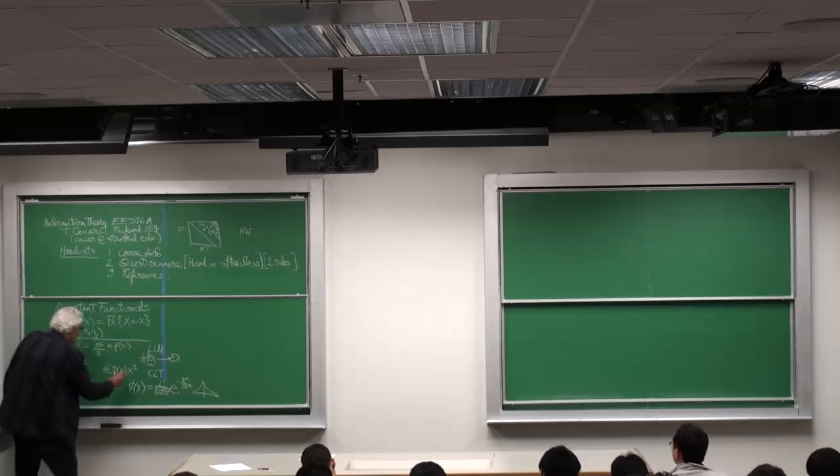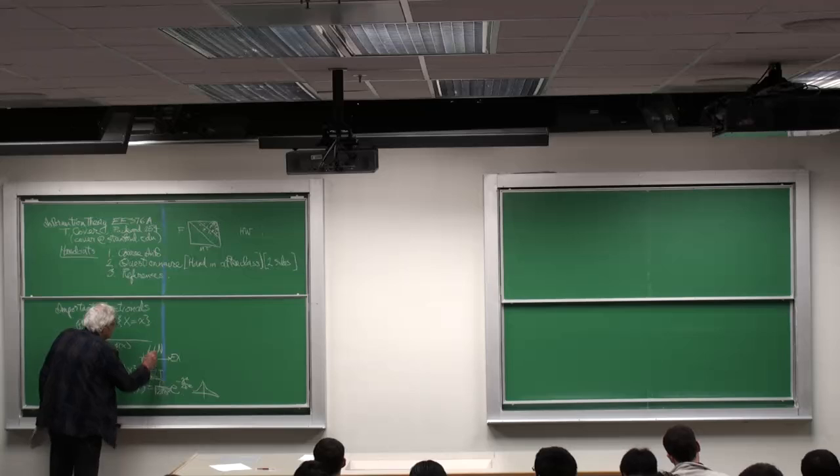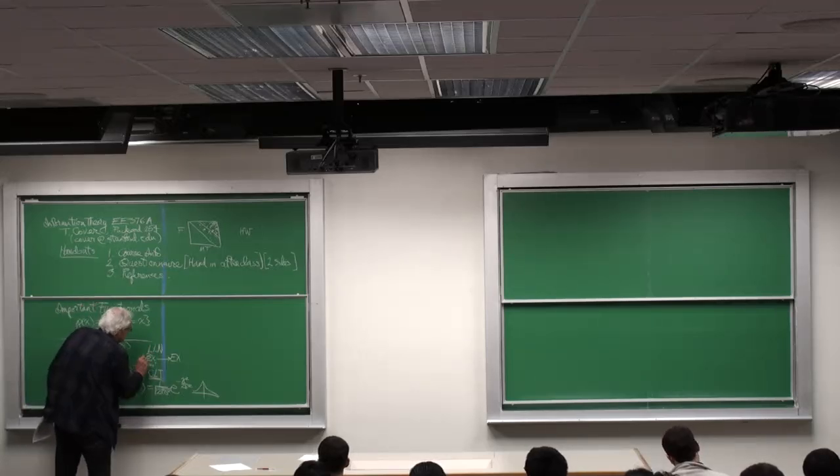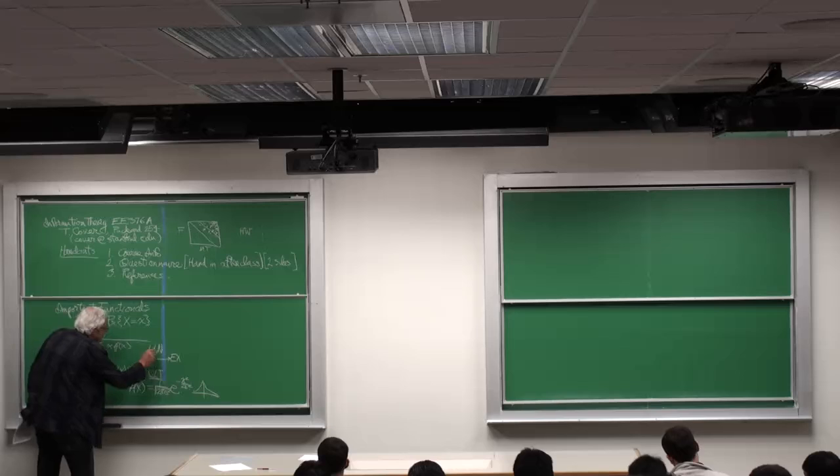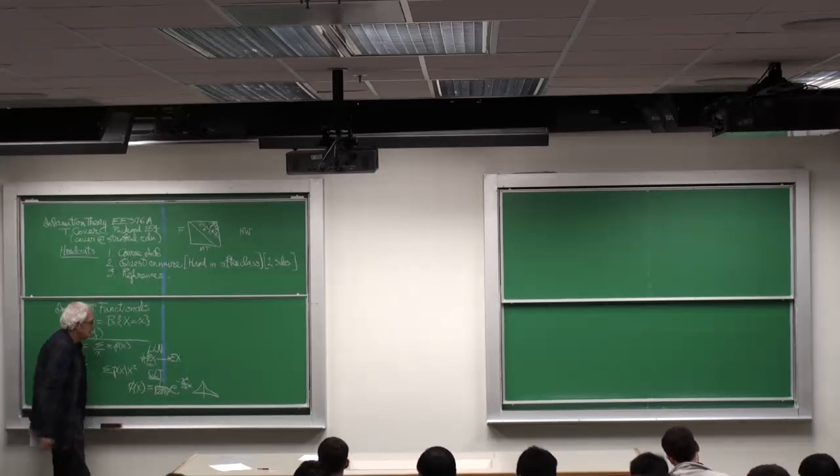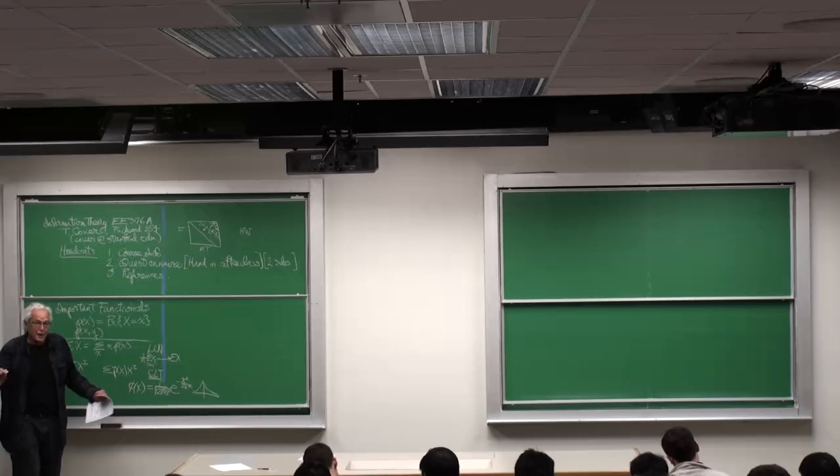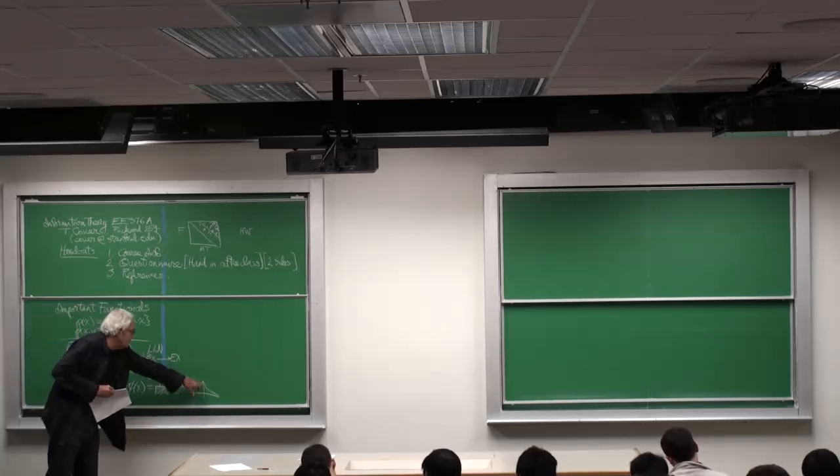And the result, in any case, the central limit theorem tells you not only does this go to the mean, but the shape of the limiting distribution as it cinches up on the mean will be Gaussian.